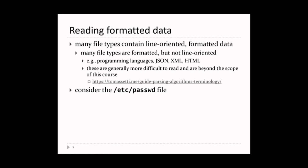We're talking about reading and writing data. A lot of the data you deal with when reading or writing to a file is formatted somehow. Many files are line-oriented - each line contains some information that is formatted or organized some way. Many other types of files have structure but are not line-oriented, like Java or C programs. Languages like JSON, XML, or HTML are all structured or formatted, but they're not line-oriented.